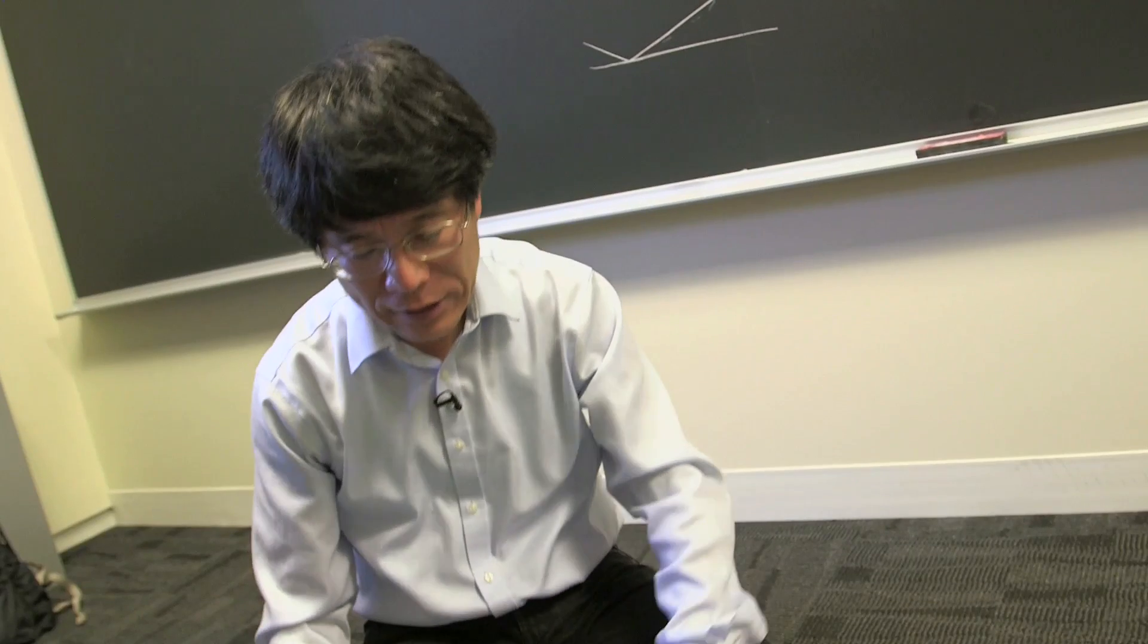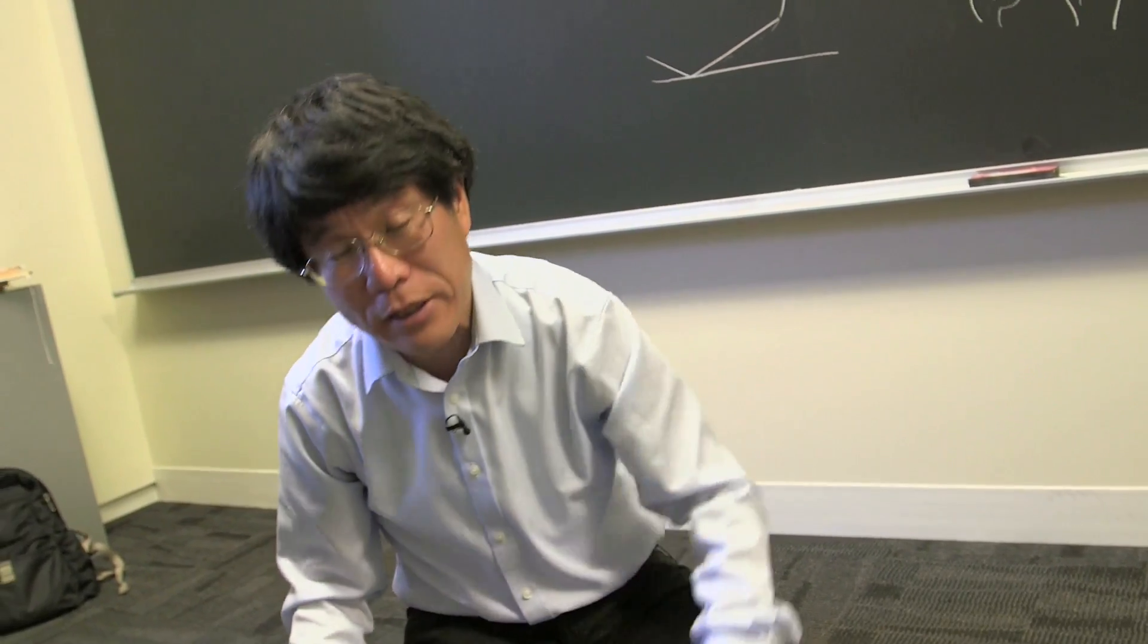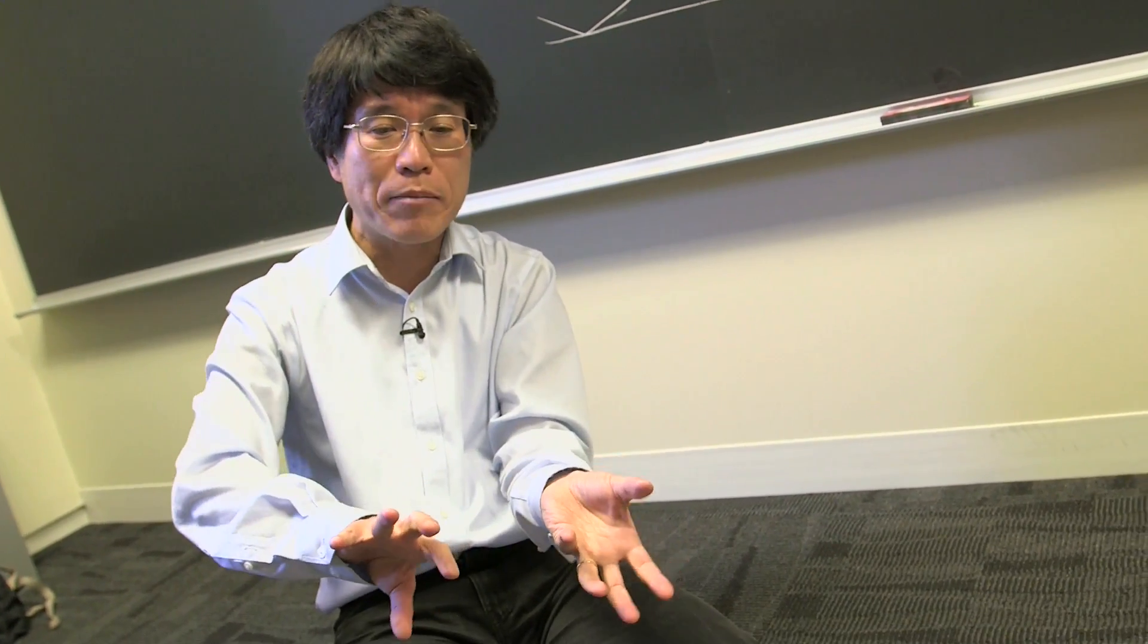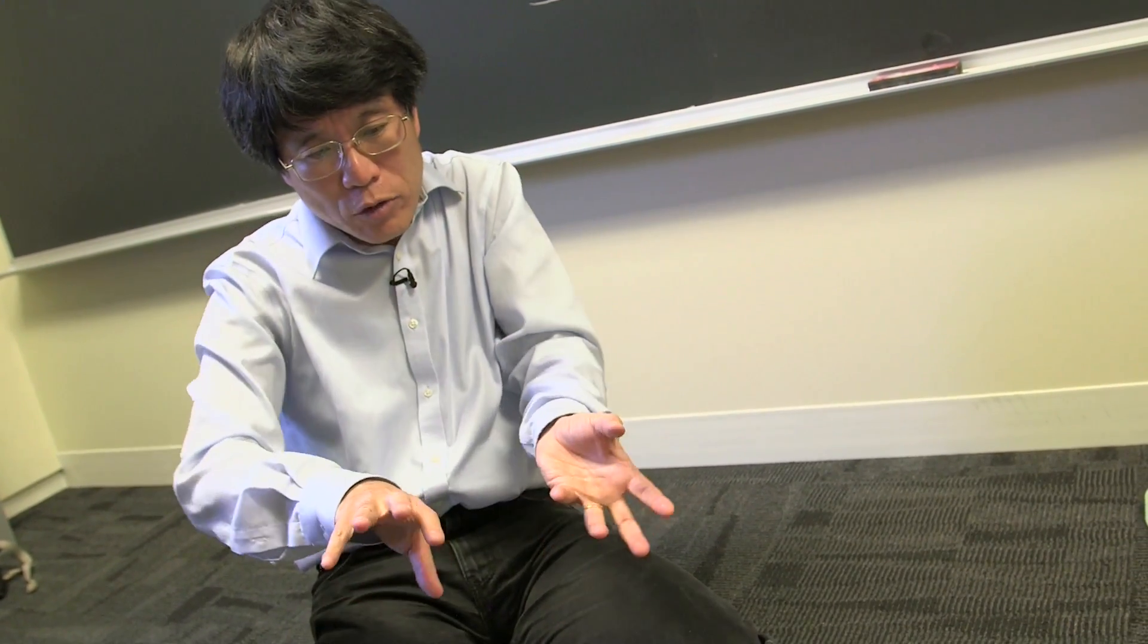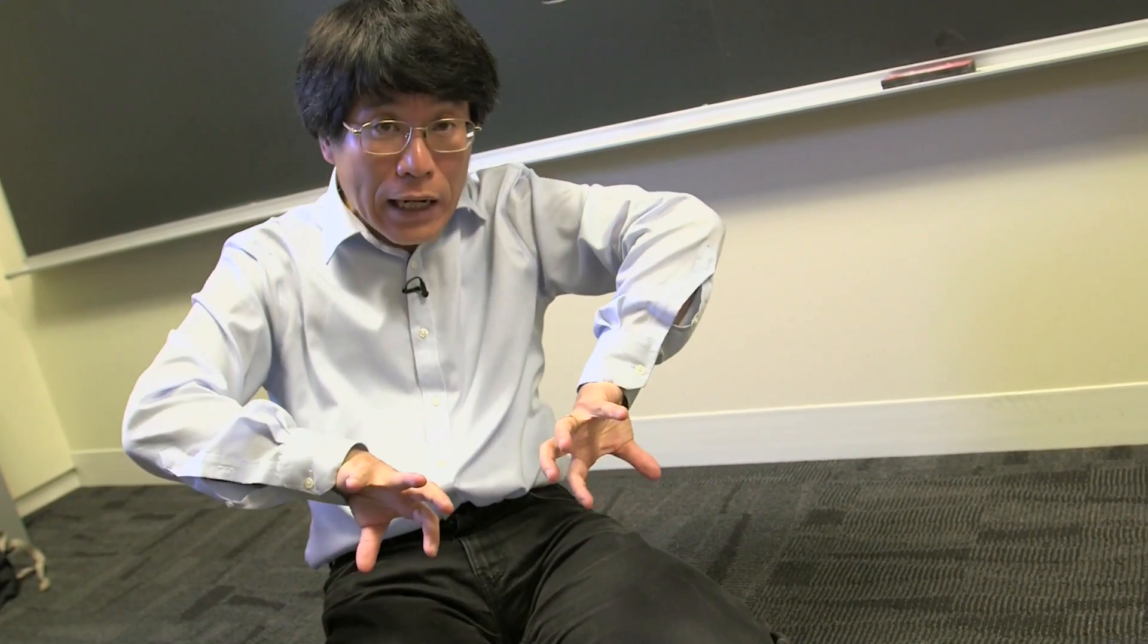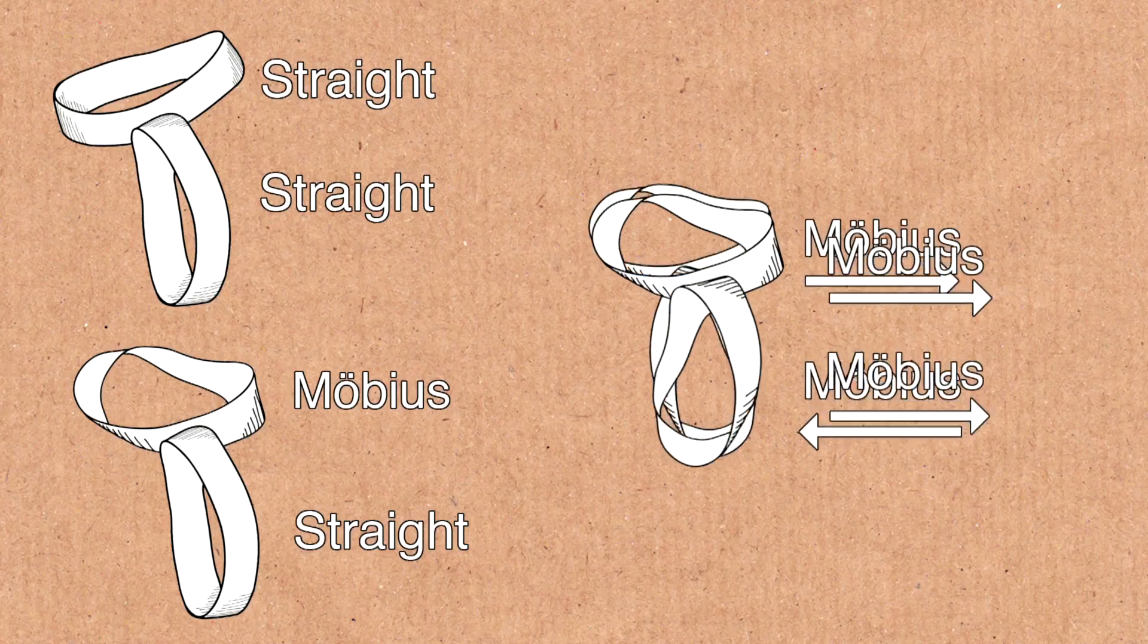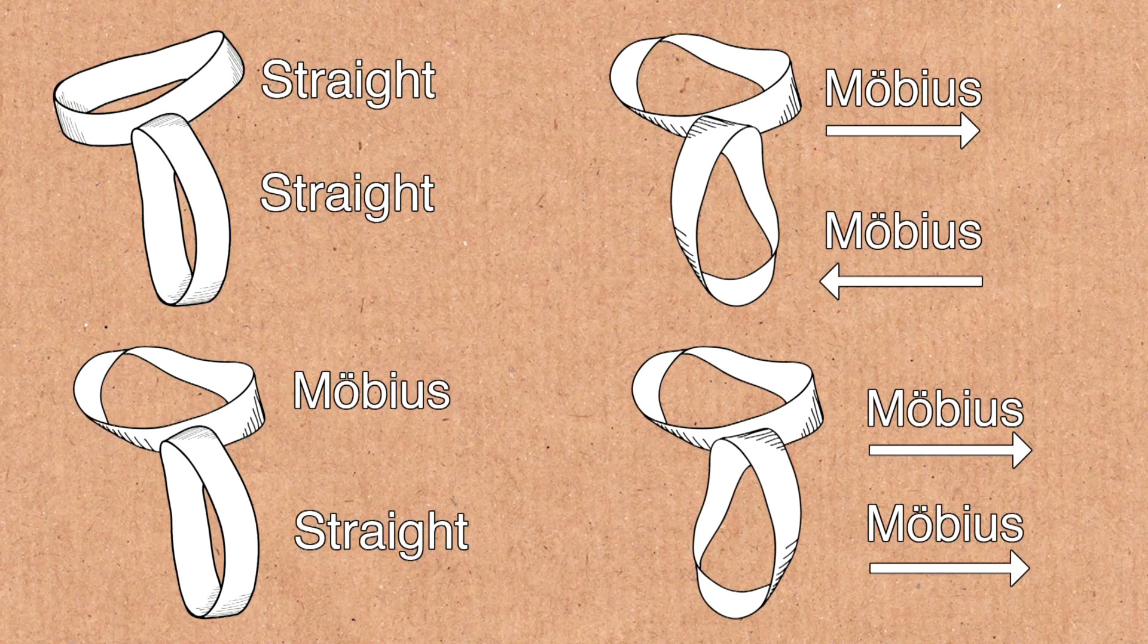And now you're thinking Tadashi can't count because there are only three cases, but actually there are four because when you glue Möbius against Möbius, those two Möbius strips can be of the same chirality. That is, they might be twisted in the same direction. Or they can have opposite chiralities. That is, they are twisted in opposite cases. A priori, maybe they'll produce different results. So we have to be careful.